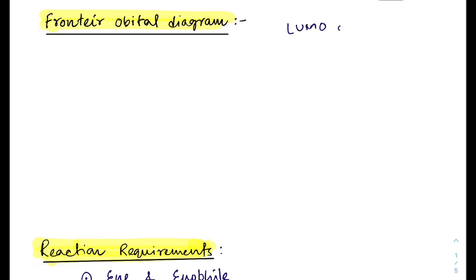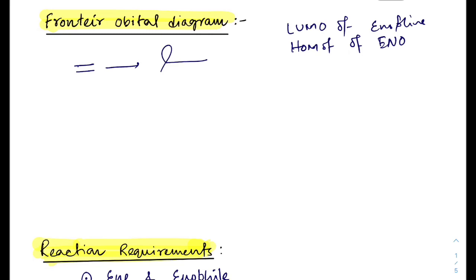In the frontier orbital diagram, the LUMO of the enophile reacts with the HOMO of the ene. If we draw the LUMO of the enophile, it looks like this, and its corresponding LUMO will look like this, where a nodal plane passes through the C-C bond. The HOMO of the ene is like this.